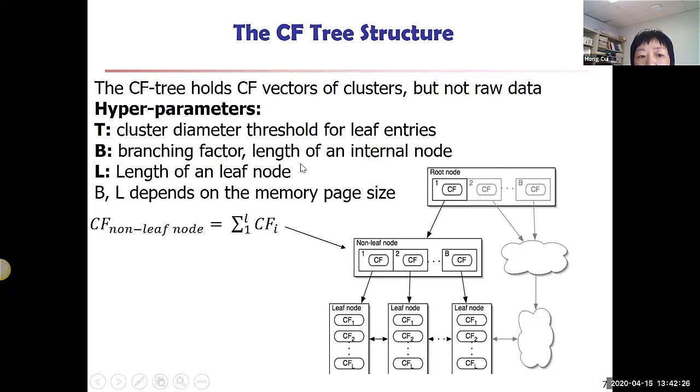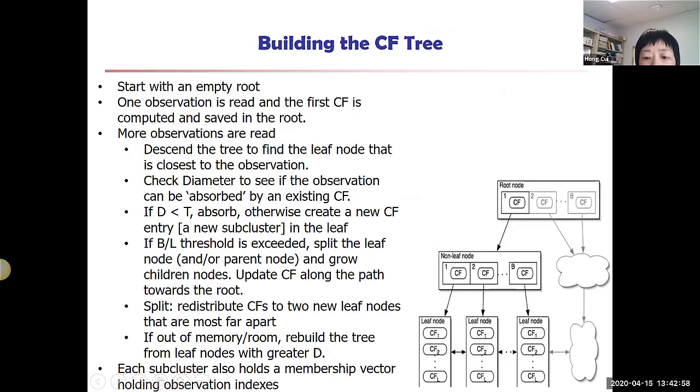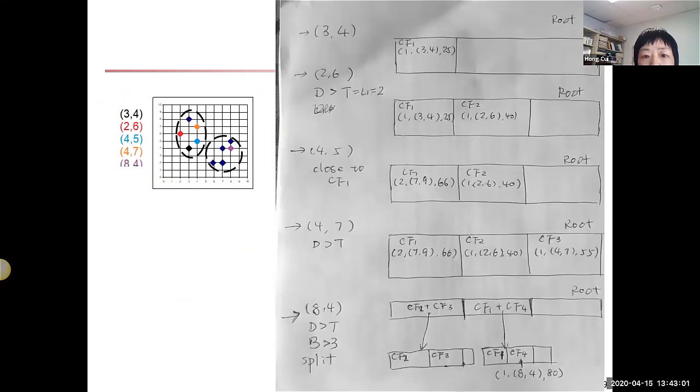This tree has three hyperparameters. T is critical—it's the cluster diameter threshold for the leaf entries. This T controls how tight each little cluster in the leaf node is going to be. B and L are the room we have in the internal node and in the leaf node—how many CFs we can hold.